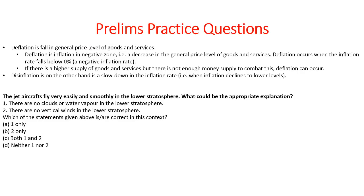The explanation says deflation is the general fall in price level of goods and services, while disinflation is the slowdown in the inflation rate. The third question is from previous year question papers: jet aircraft fly very easily and smoothly in the lower stratosphere — what could be the appropriate explanation? There are no clouds or water vapor in the lower atmosphere, and there are no vertical winds in the lower atmosphere. Both these statements are right, and the answer is both one and two.